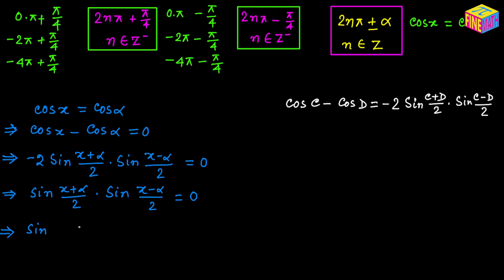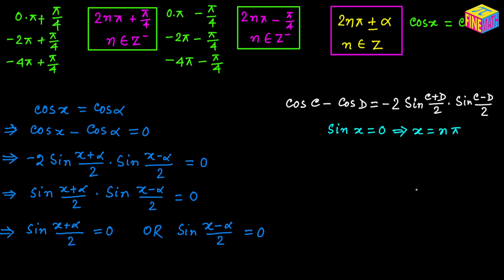The first solution comes from sine of (x plus alpha) over 2 equals 0, and the other from sine of (x minus alpha) over 2 equals 0. From the first video on solving trigonometric equations, when the sine of any angle equals 0, the general solution for that angle is n times pi. We are going to use that same result here for each factor.